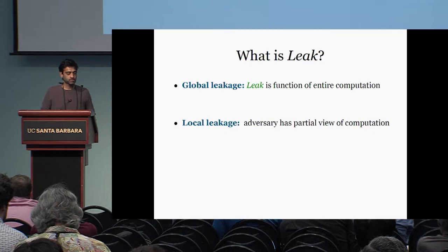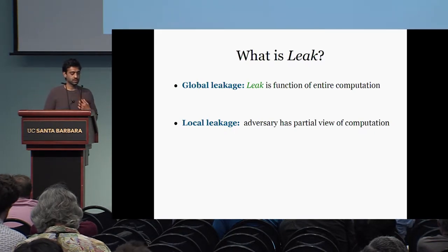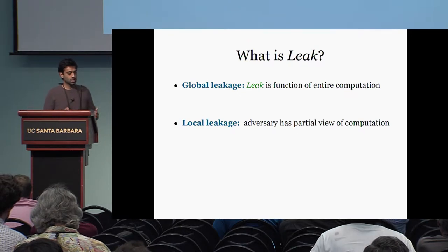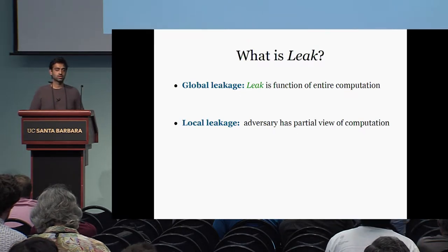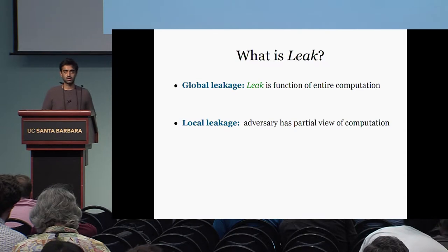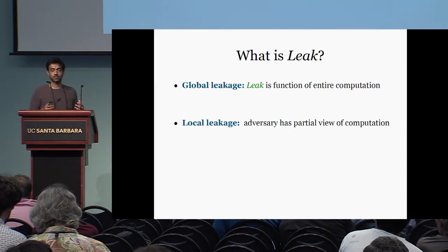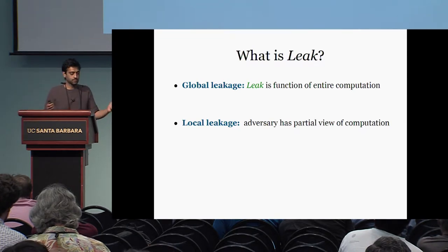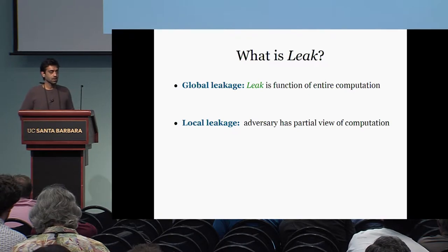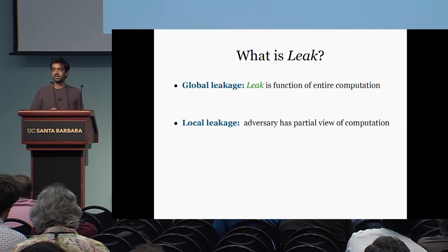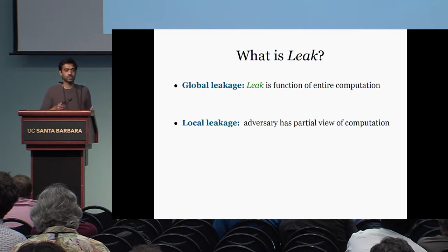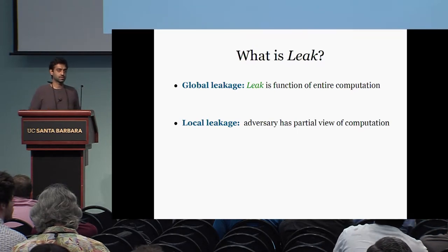The question is: what sort of leakage functions can the adversary submit? There are two categories. One is global leakage, another is local leakage. In the case of global leakage, the leak is a function of the entire computation — for instance, it could compute the parity of all bits. In local leakage, the adversary has some partial view of the computation; you can think of it as divided into blocks, and the adversary gets some subset of these blocks.